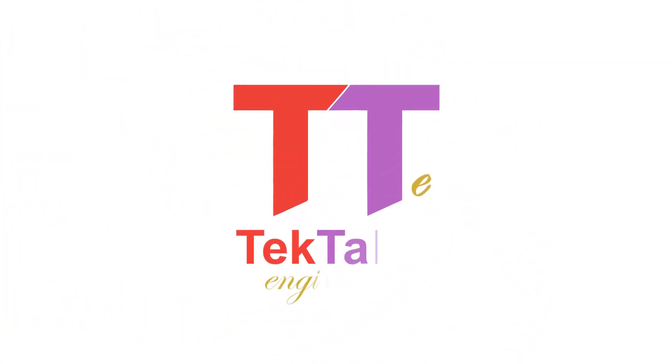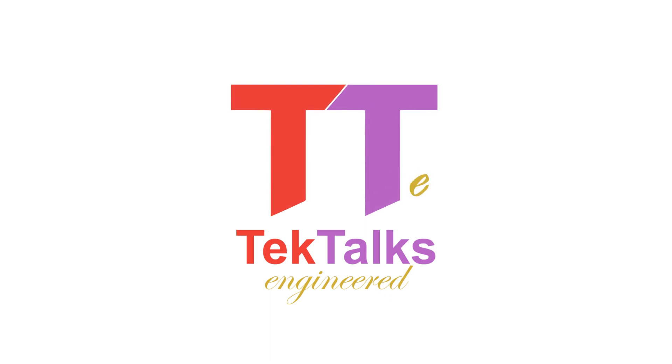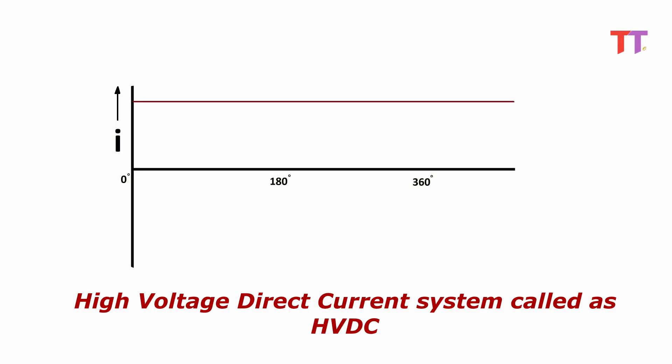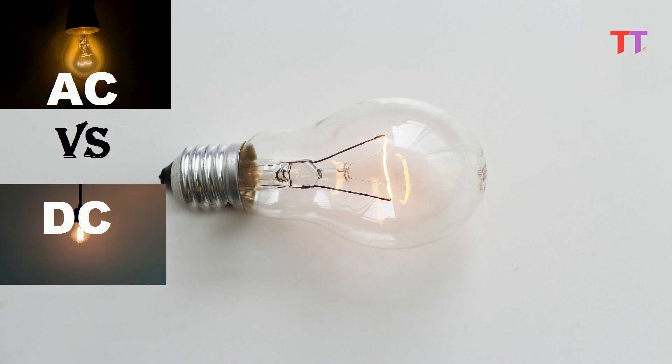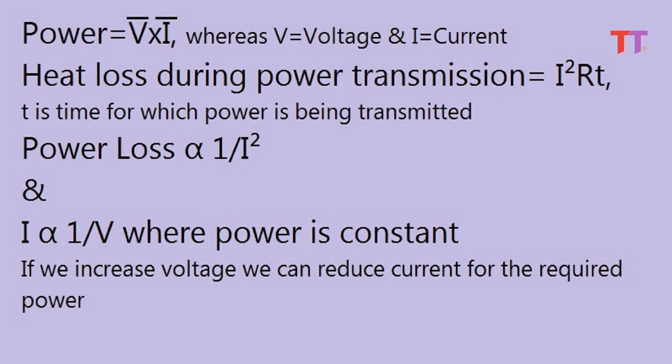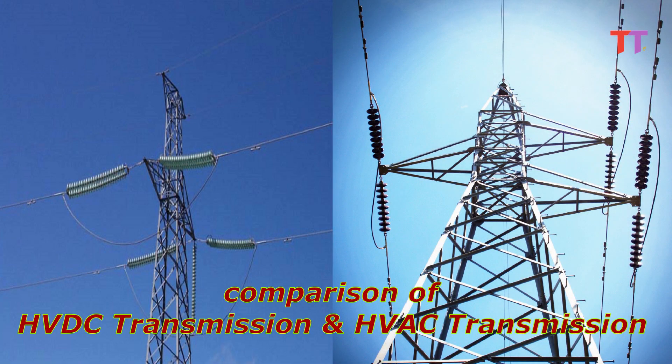Hello friends. Welcome to Tech Talks Engineered. Today we will see the difference between high voltage direct current system called HVDC and high voltage alternating current system called HVAC. In one of the previous videos, we have already discussed one distinguishing factor which is loss — in HVAC system loss can be minimized by stepping up transmission voltage, however the same is not possible in HVDC. For details please click on the link given. Now let's see a point-wise comparison of HVDC and HVAC transmission.